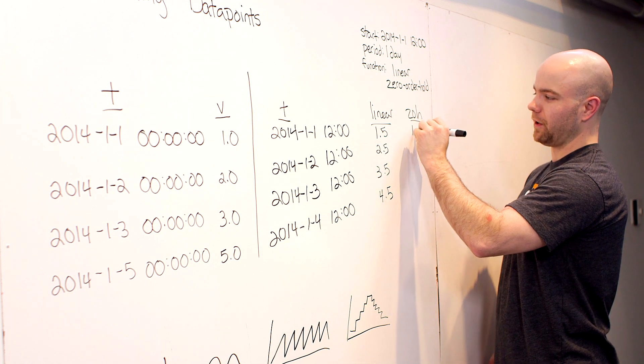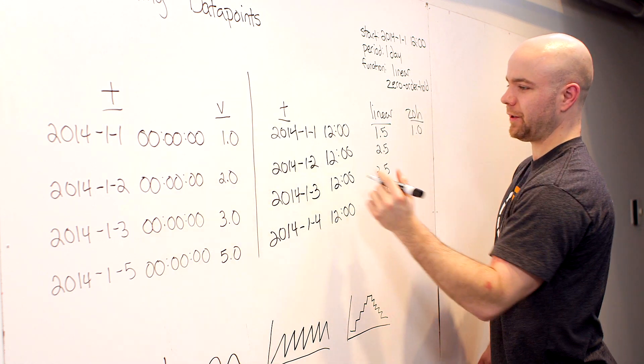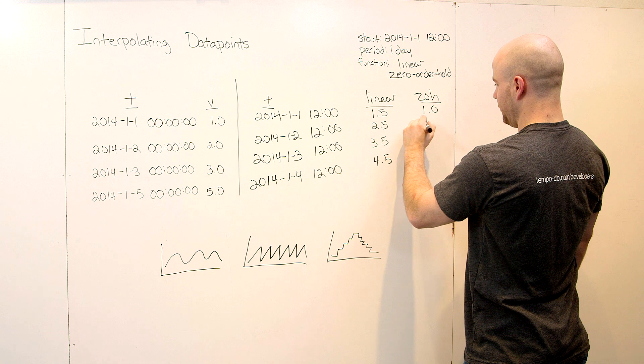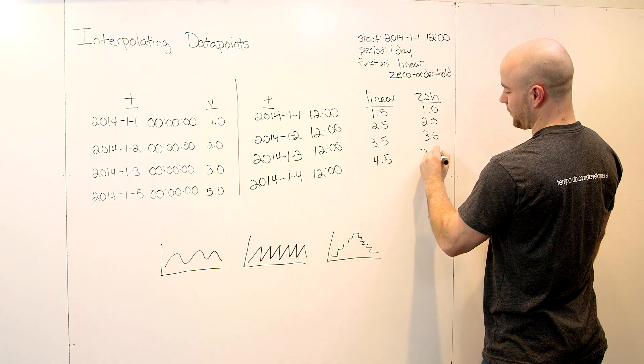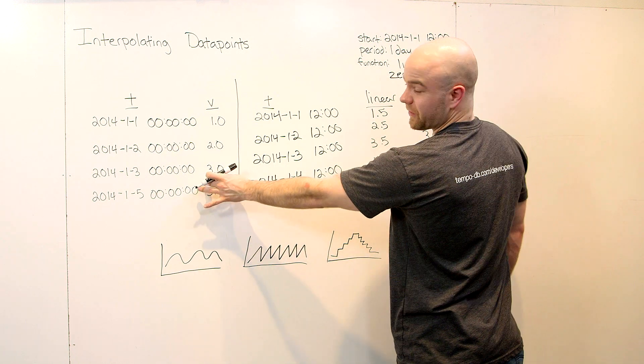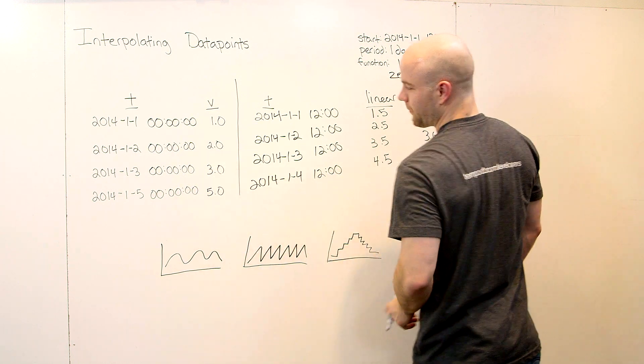Zero order hold, on the other hand, is going to give us 1, because we're holding the previous value over, then 2, then 3, then 3 again, because we didn't have a point at 4, so we just have to keep whatever was on the third.